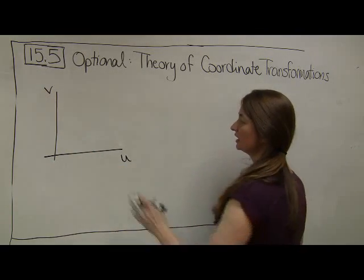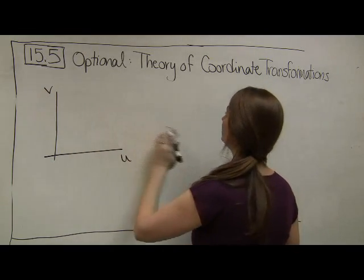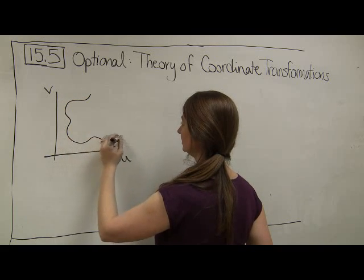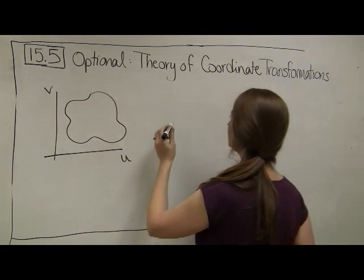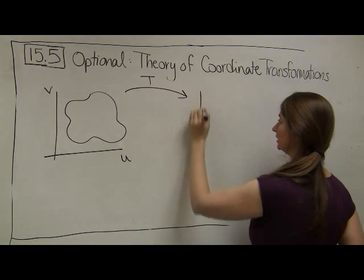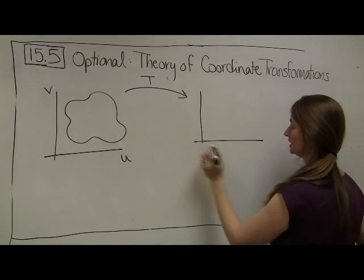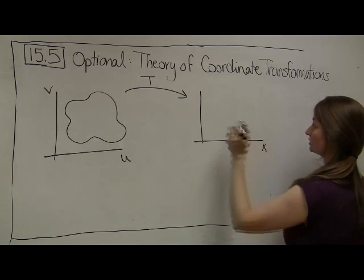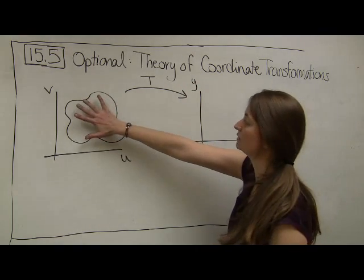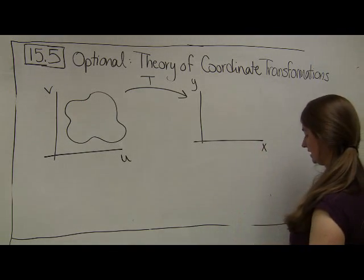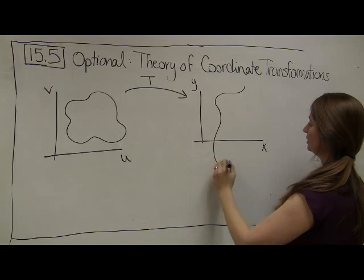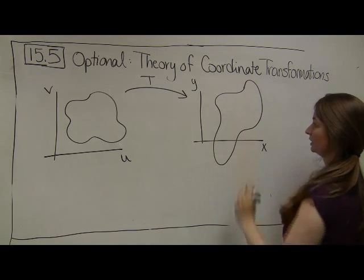Let's say that I start in the UV plane, and I have some region in the UV plane, and then I have some coordinate transformation T that transfers my coordinates into the XY plane. Now under this transformation, my original region isn't going to look the same — it's going to get all squishy or tilty, depending upon whatever the transformation is.